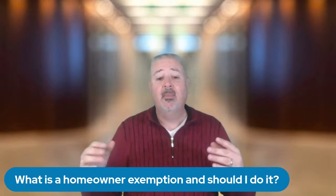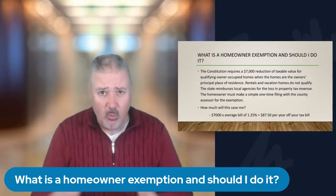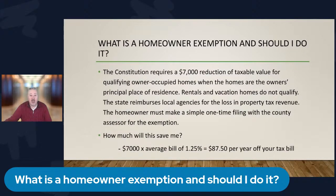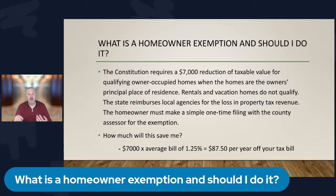Let's dive into the homeowner's exemption. The Constitution requires a $7,000 reduction of taxable value for owner-occupied homes that are the owner's principal place of residence. Rentals and vacation homes don't qualify, and the state reimburses the county for the lost money. You are decreasing the net taxable value by $7,000 every year.